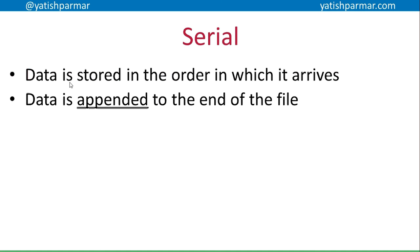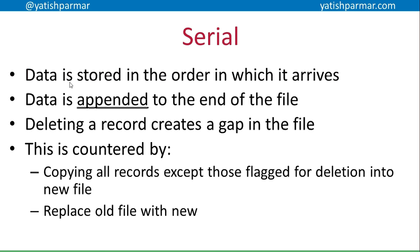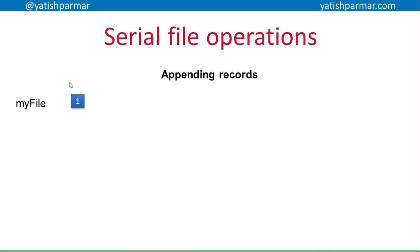Every time data arrives, it is appended to the end of the file. Deleting a record creates a gap in the file. The process for deleting records is: copy all the records apart from those marked for deletion, then replace the old file with the new one. Because data is stored in the order it arrives and appended to the end, serial files are superb for creating transaction files. For example, through the day people buy things at a supermarket — all those transactions are added to a transaction file in order, and at the end of the day that is merged with the stock file to work out current stock levels and place orders for new stock.